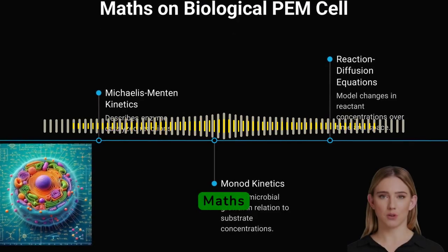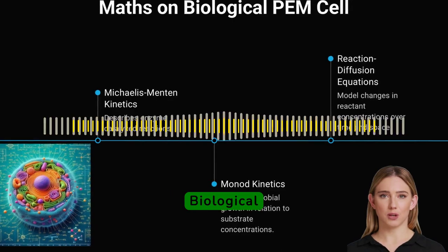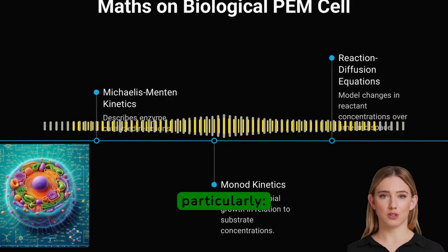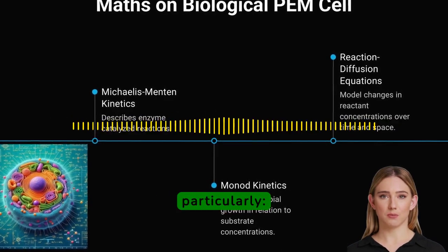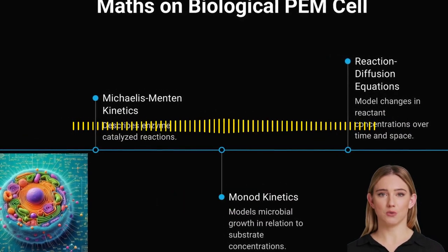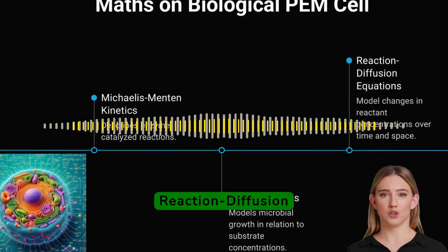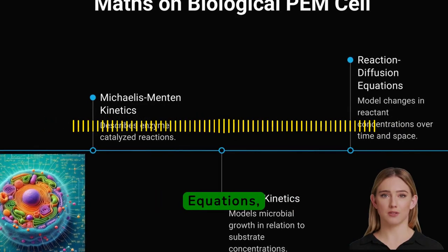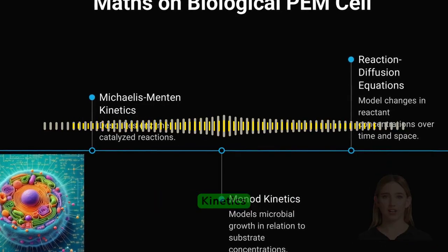It describes the maths on biological PEM cells, particularly Michaelis-Menten kinetics, reaction-diffusion equations, and monokinetics.